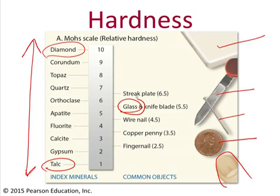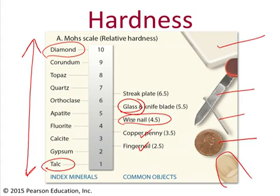So how does this work? Basically go and try to scratch the mineral. Start with either the hardest or the softest and then work your way towards the other end of the scale, and eventually you'll get stuck somewhere in the middle. For instance, say you had a mineral that was so hard it could scratch your fingernail and it could scratch a copper penny, but it was not hard enough to scratch a wire nail. So the wire nail would be harder than the mineral. That would mean that the mineral's hardness falls between 3.5 and 4.5 on the Mohs scale of hardness.